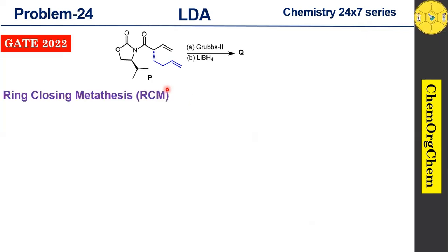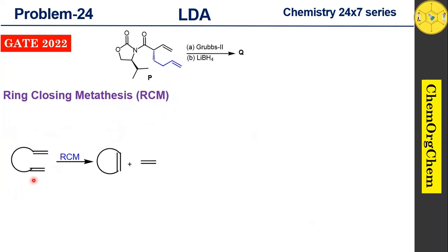Olefin metathesis means the reaction takes place between two alkenes, where the groups bonded to the carbon atoms of the double bond exchange between molecules to produce new molecules containing double bonds with swapped groups. If a compound has two alkenes in the same molecule, this is called intramolecular olefin metathesis or ring closing metathesis. For example, a compound with two alkenes undergoes ring closing metathesis to give the corresponding cyclic product along with ethylene as a byproduct.